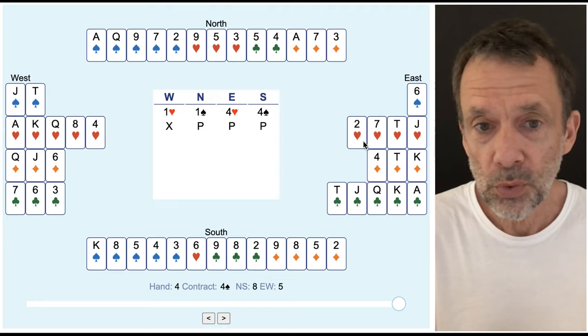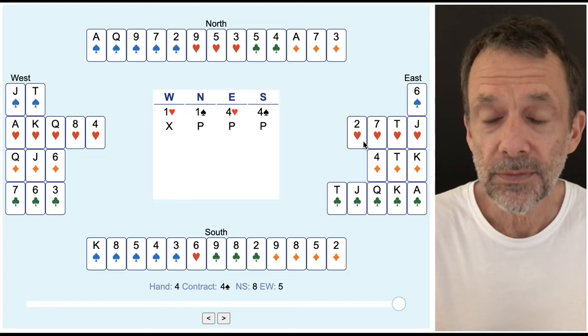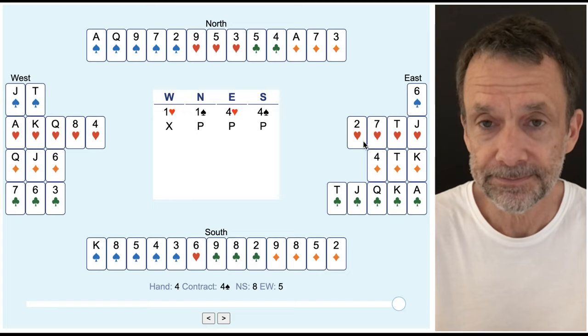From west's point of view, west would have lost a spade and a diamond, and that's probably it. So east and west could have made eleven tricks in their four heart contract for a score of 650.